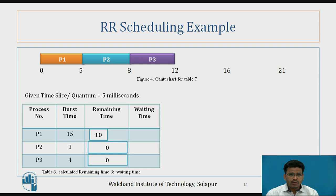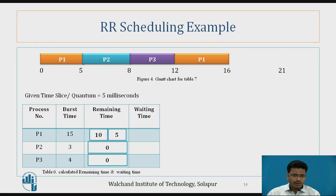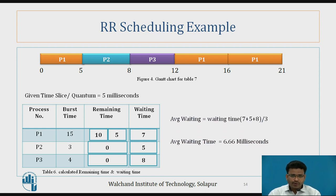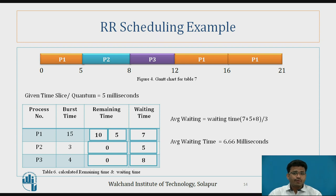We find the remaining times of each process. P1 still has a remaining time of 10, so it executes for another 5 milliseconds, reducing remaining time to 5. Then P1 executes once more and its remaining time becomes 0. The waiting time for P1 is 7, for P2 is 5, and for P3 is 8. The average waiting time equals (7 + 5 + 8) divided by 3, which is 6.66 milliseconds. In this way Round Robin scheduling works.